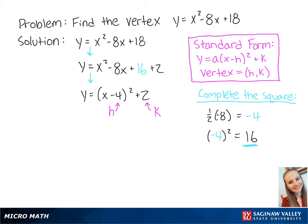Now that we have our h and our k, we know that the vertex is 4, 2. This is the final answer.